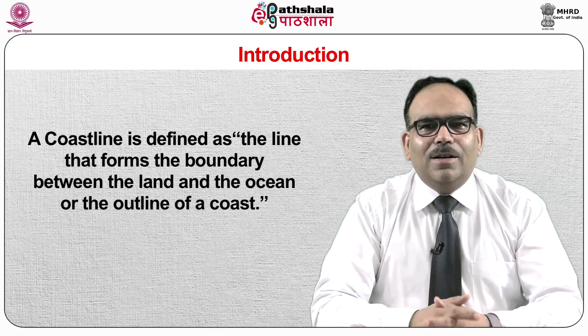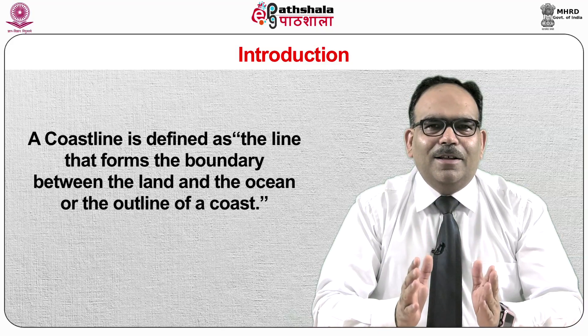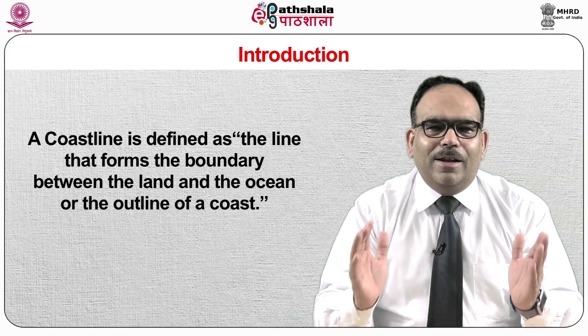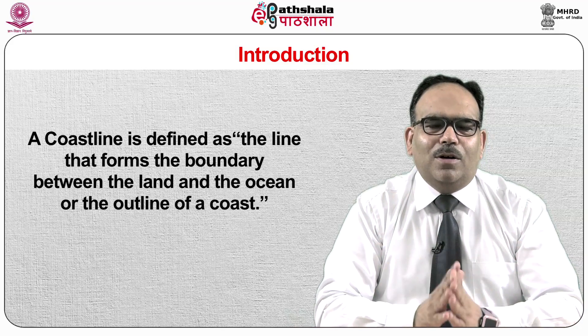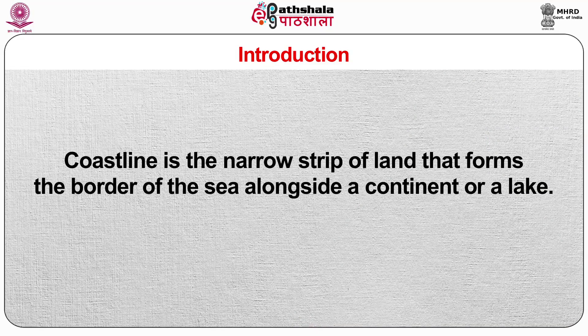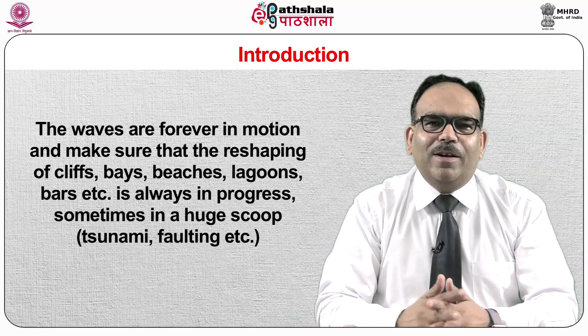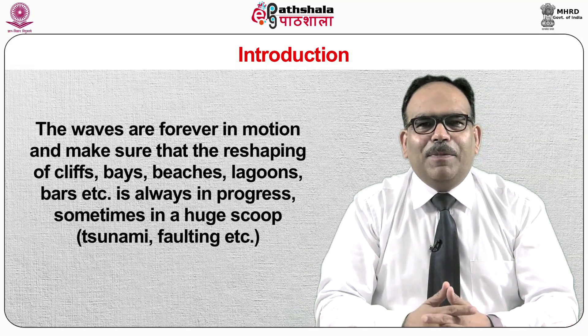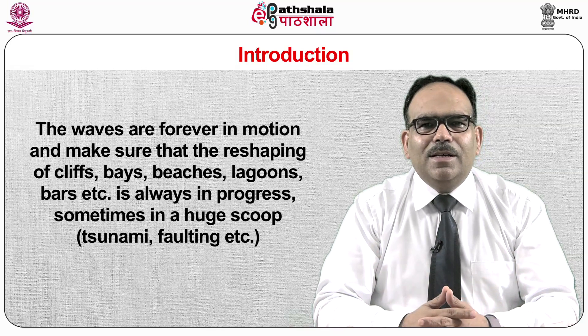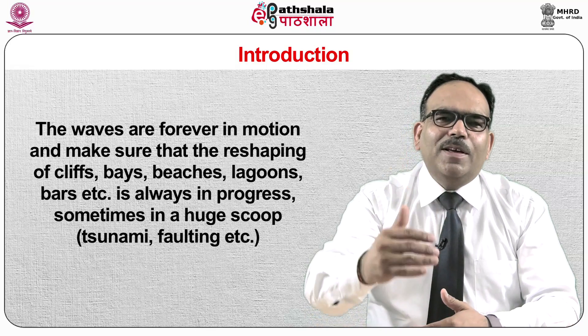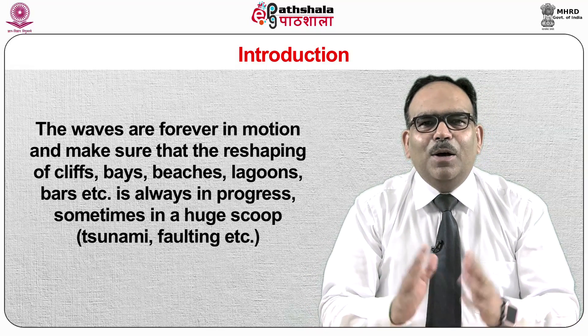A coastline is defined as the line that forms the boundary between the land and the ocean, or the outline of a coast. The coastline is the narrow strip of land that forms the border of the sea alongside a continent or a lake. The waves are forever in motion and reshape cliffs, bays, beaches, lagoons, bars, etc., sometimes in a huge scoop and sometimes one sand grain at a time. One thing that is constant at the coastline is change.